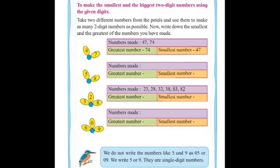Now, to make the smallest and the biggest two digit numbers using the given digit. Take two different numbers from the petals and use them to make as many two digit numbers as possible. Now write down the smallest and the greatest of the numbers you have made. Here the numbers have been given in the petals and you have to make the two digit numbers and you have to write the greatest and the smallest of that particular number. The first sum is been done for you.